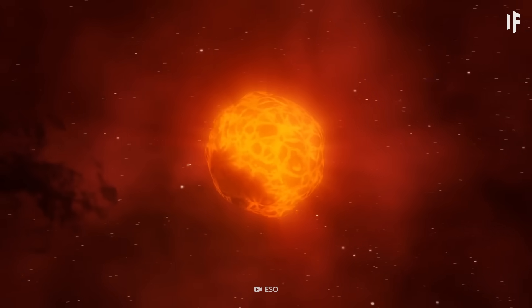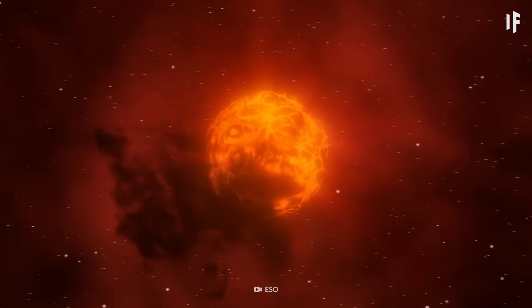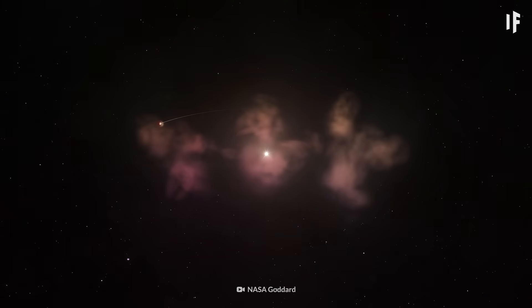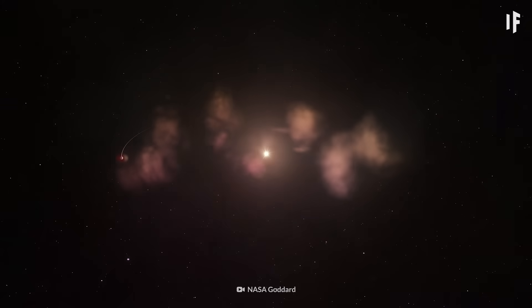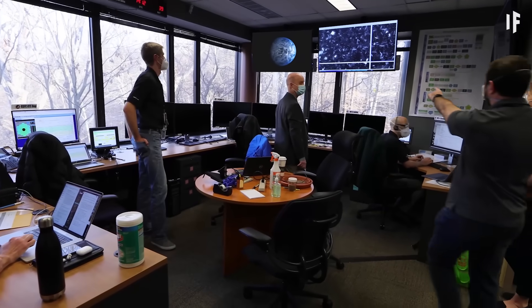One theory is that HD 189733 b formed right next to it during the star's earliest moments. Or it could have developed further away, only to be pulled in as the rest of the planetary system formed. But there's one thing we know for sure.